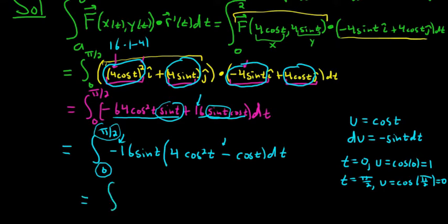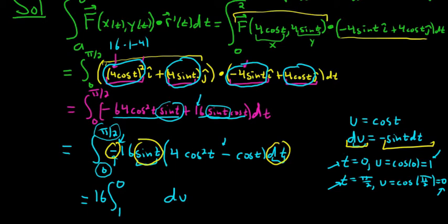So when t is 0, u is 1. So this is going to become a 1. When t is pi over 2, u is 0. So this is a 0. Our negative sine t dt is just our du. So du is going to absorb the negative. We'll still have the 16. This negative and this sine t and this dt, that's precisely du. So that's the only thing we've substituted. And the 16 hung out and I put it here.